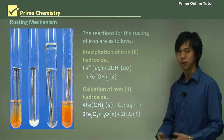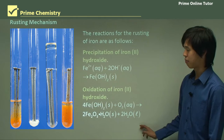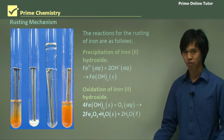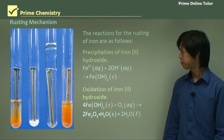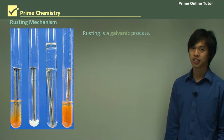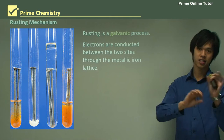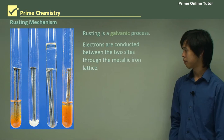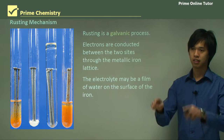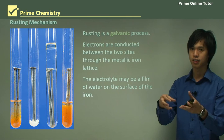As you work your way across, you can see the different processes: here's the iron hydroxide, and then you've got the actual rust — the hydrated iron oxide. Rusting is a galvanic process, a redox reaction style process. Electrons are conducted between the sites through the metallic iron lattice — through the actual metal. The electrolyte may be a film of water on the surface, which can complete the circuit electrically.